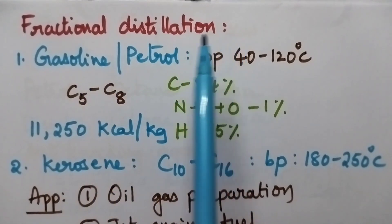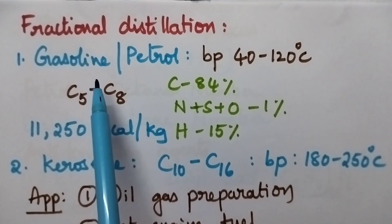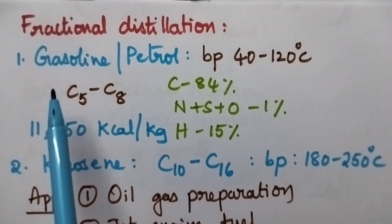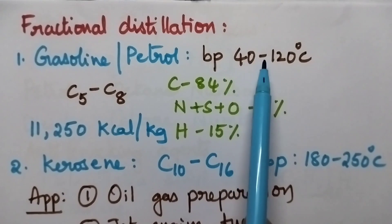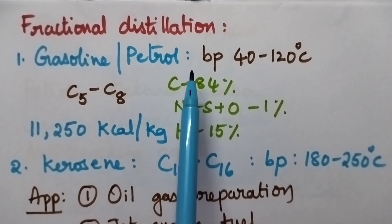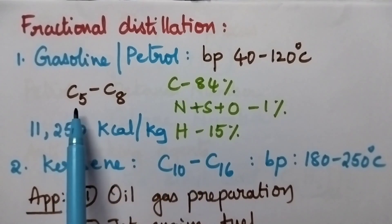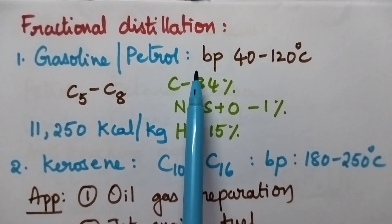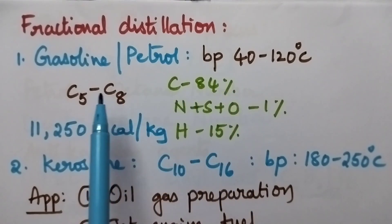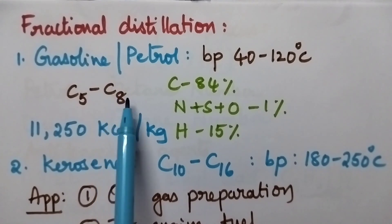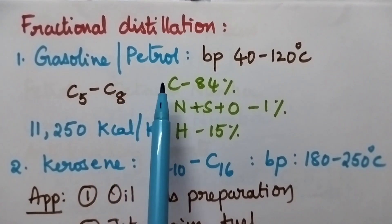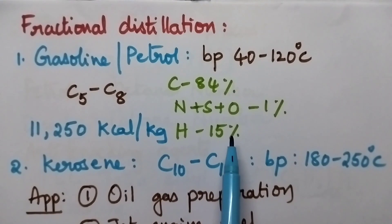In order to get different liquid fractions from the petroleum, fractional distillation is used. Here the gasoline is having boiling point from 40 to 120 degree centigrade. Especially the liquid fuels consist of hydrocarbons. Depending upon the length of the carbon atoms, the boiling point increases. Gasoline consists of hydrocarbons ranging from C5 to C8. Especially gasoline is the liquid fuel with greatest demand. Its composition is carbon 84%, hydrogen 15%, nitrogen plus sulfur plus oxygen will be 1%. Its calorific value is 11,250 kilocalories per kg.